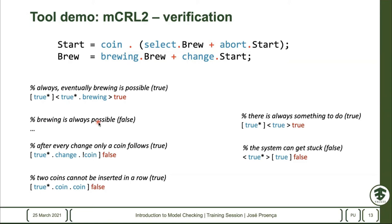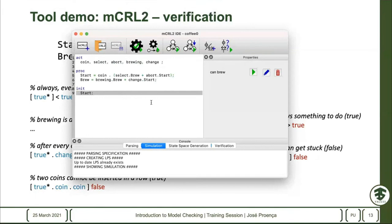There are other variations, some more complex and some less. 'Brewing is always possible' feels very similar but is subtly different — dropping 'true star' means: from right now can I always get a coffee? This will be false, which basically means I cannot always get a coffee if I don't put a coin. There are lots of subtleties: if you change this a bit, you change the interpretation. Getting these logical properties right is also part of the verification process.